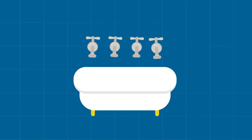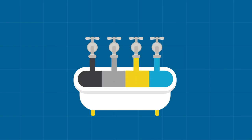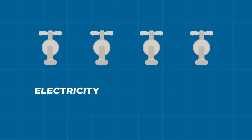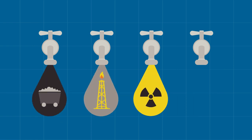Imagine the electric grid is a giant bathtub that is constantly being filled from many different faucets. Each one represents a different electricity generation source, such as coal, natural gas, nuclear, and wind.